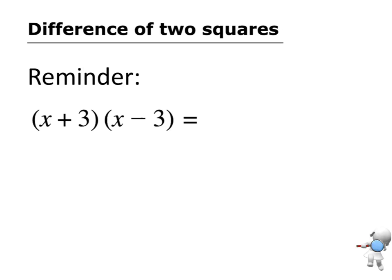So when I'm expanding this, I'm going to go x times x will give me x to the power of 2. x times minus 3 will give me minus 3x. Positive 3 times x will give me plus 3x. And plus 3 times minus 3 gives me minus 9.